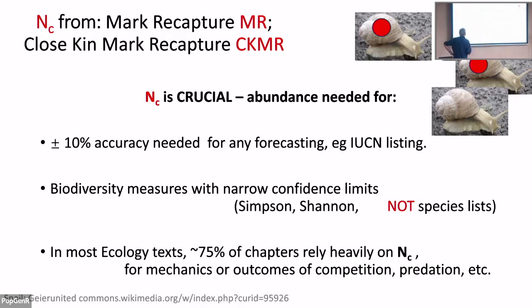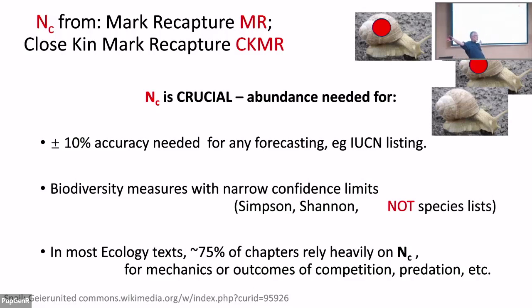Abundance is crucial for IUCN listing — you're meant to have plus-or-minus 10% accuracy, and neither of those methods can produce that. For producing biodiversity measures with narrow confidence limits, like Simpson's or Shannon's diversity index — Shannon's being the most commonly used abundance-based one — species-list presence/absence data has error bars so large it's, in my opinion, useless for conservation. Also, about 75% of chapters in most ecology textbooks rely heavily on census size for things like competition and predation, yet ecologists spend their lives avoiding those topics because they can't estimate population size.